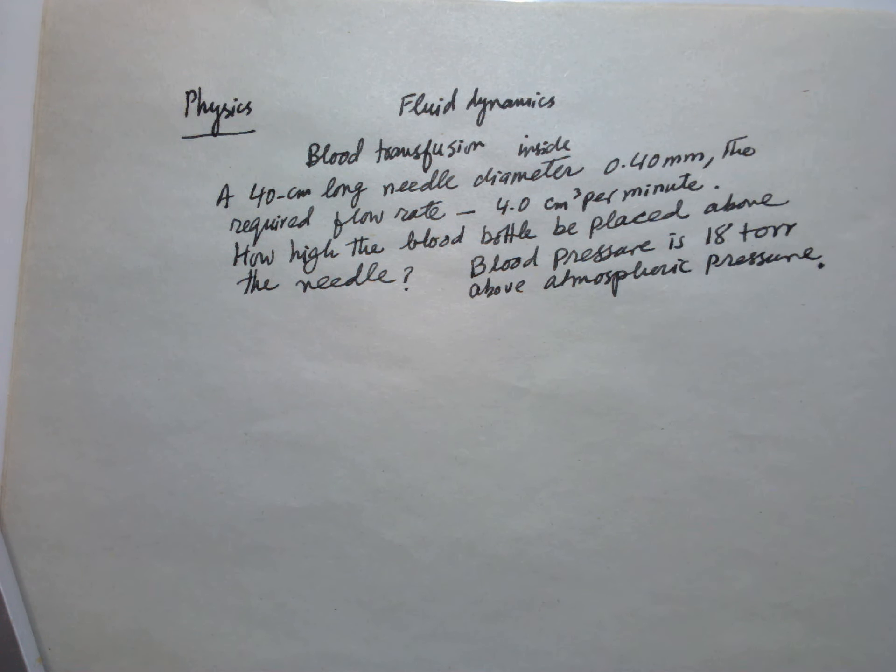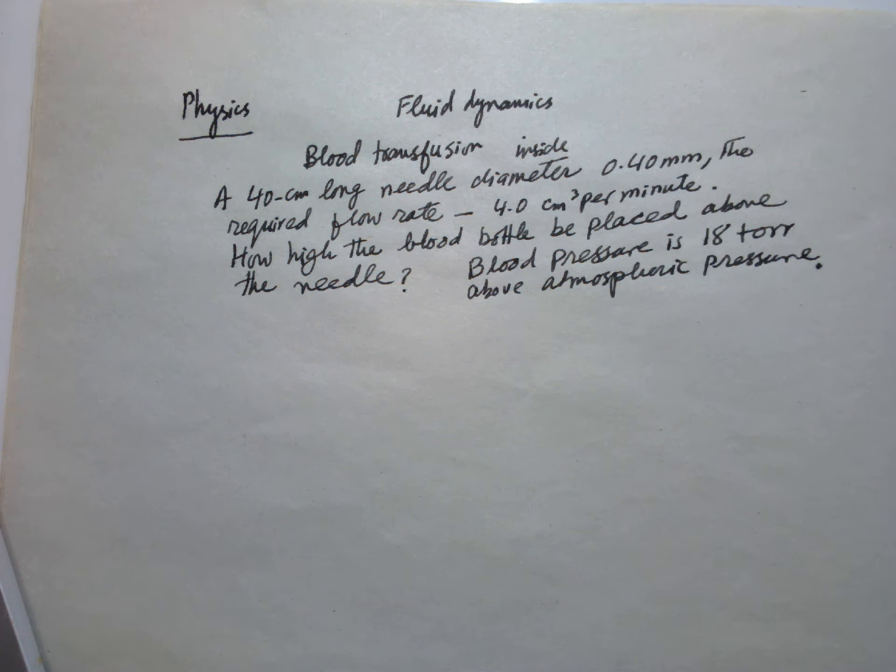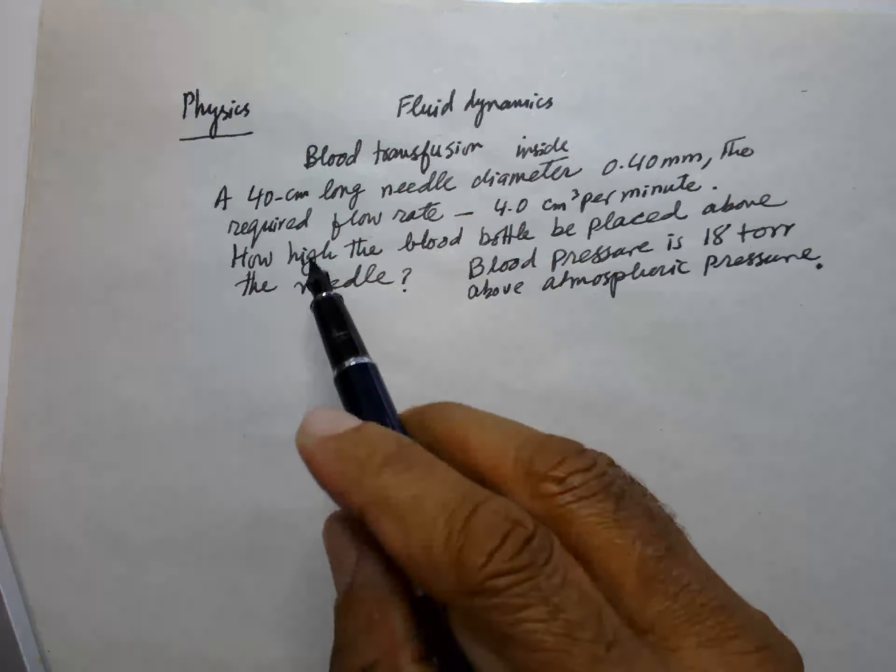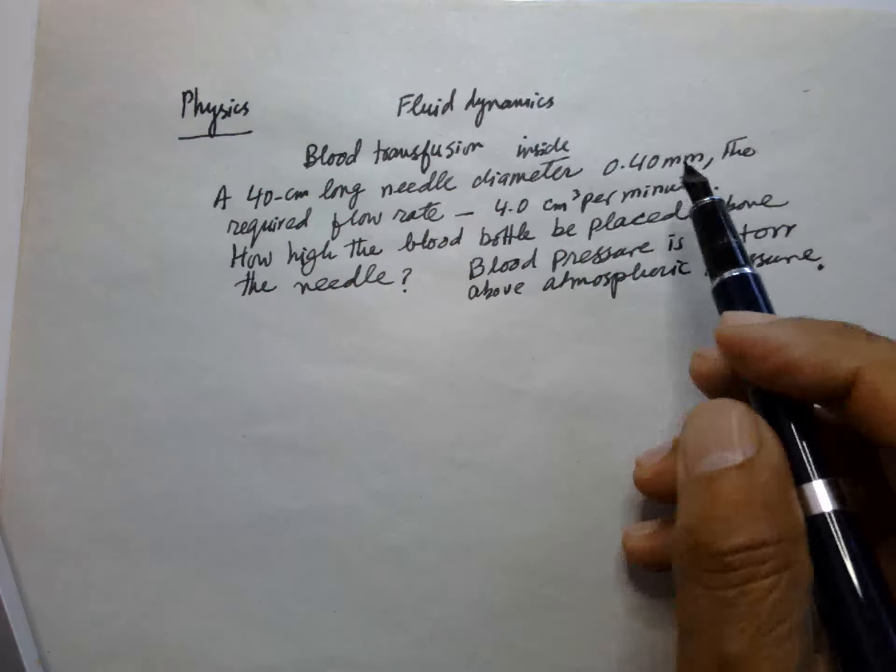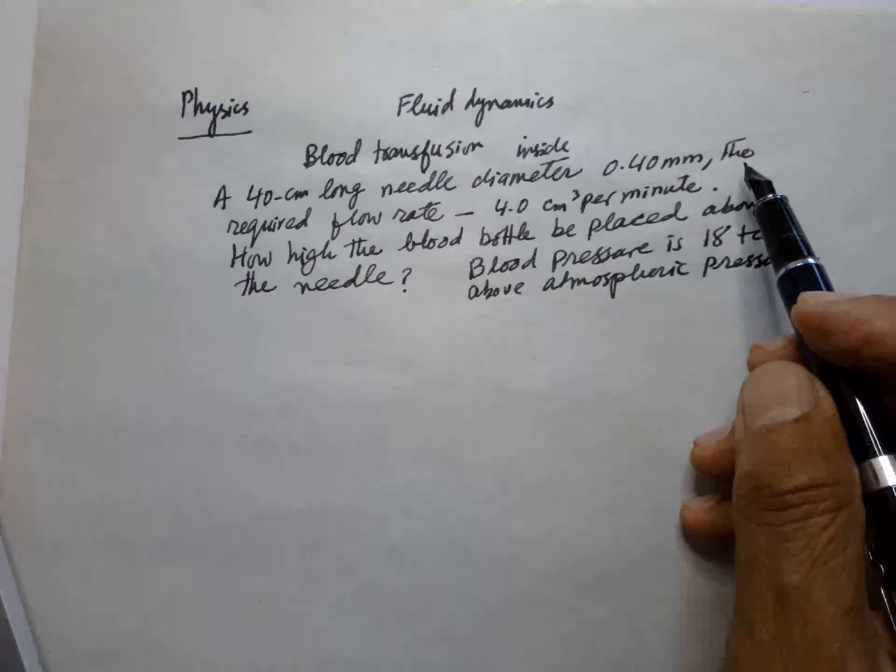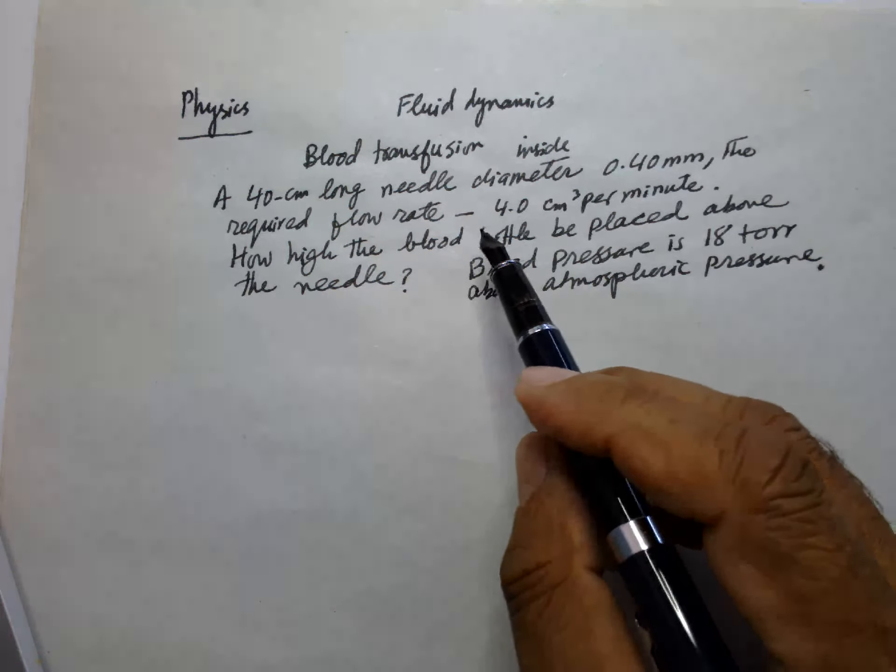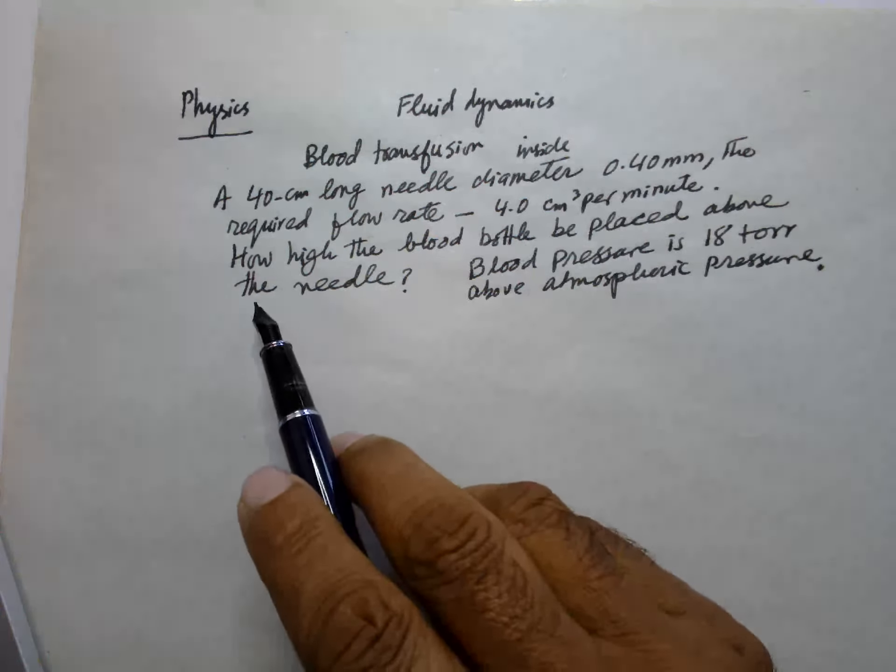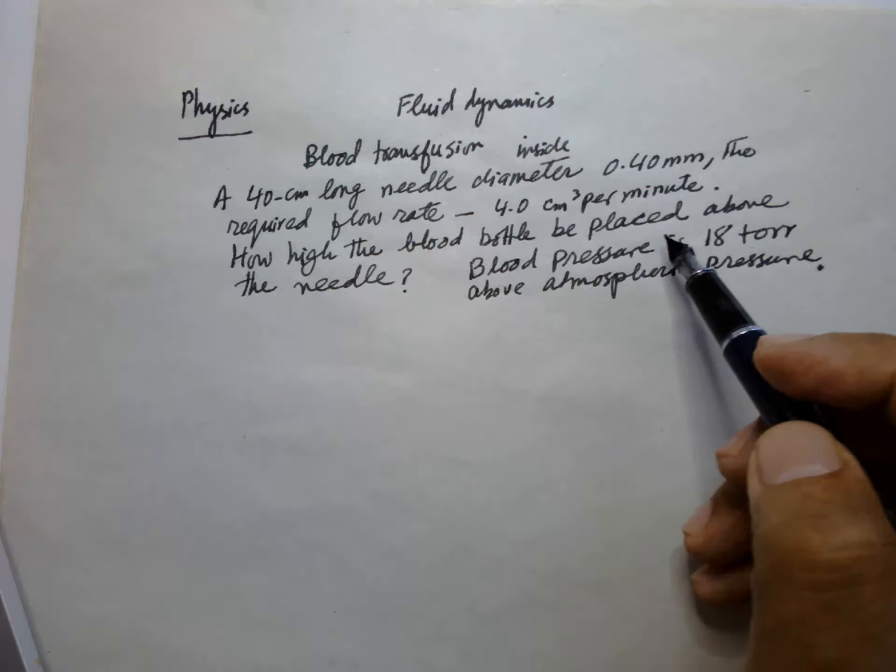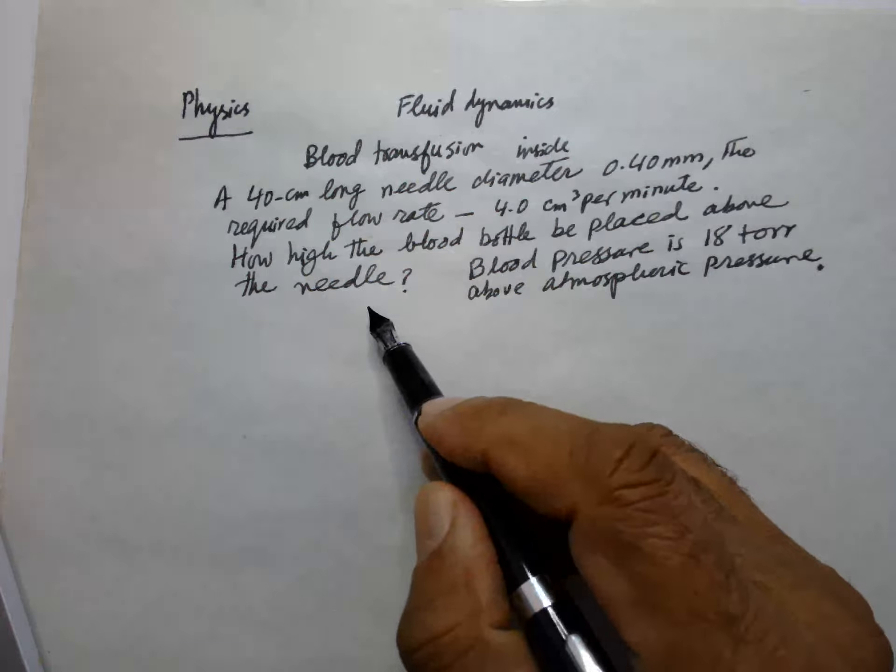Hello Physics. This is an important question about blood transfusion. A 40 cm long needle with inside diameter 0.4 mm is used. The required flow rate of the blood is 4 cm³ per minute.